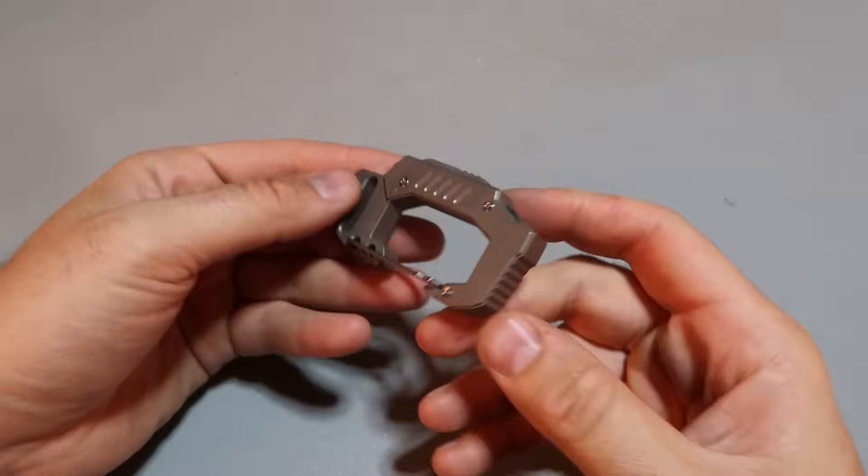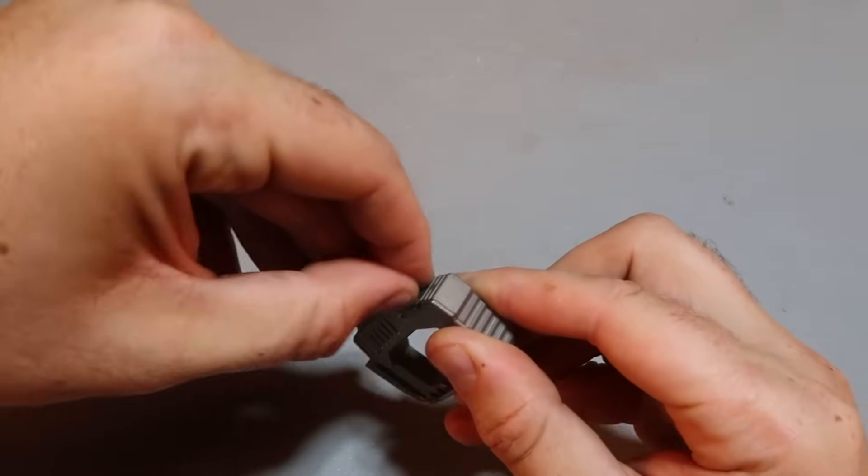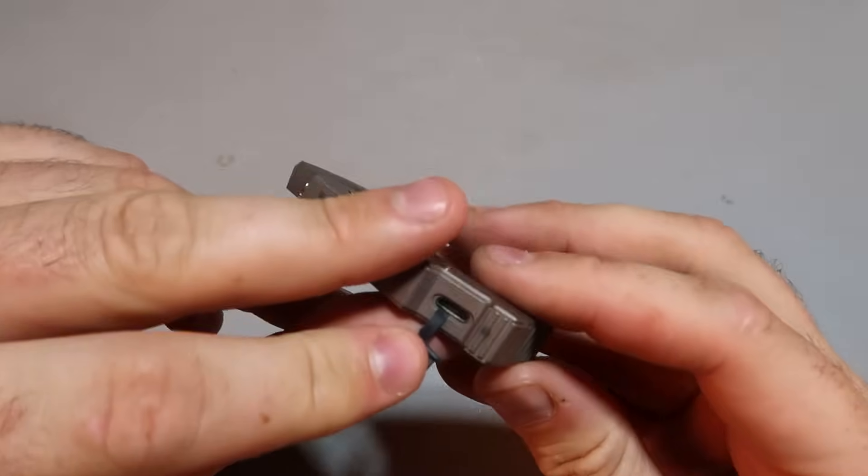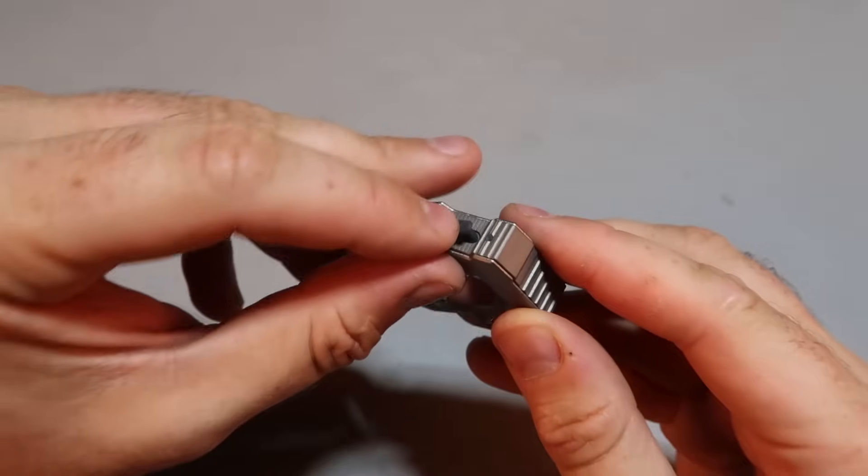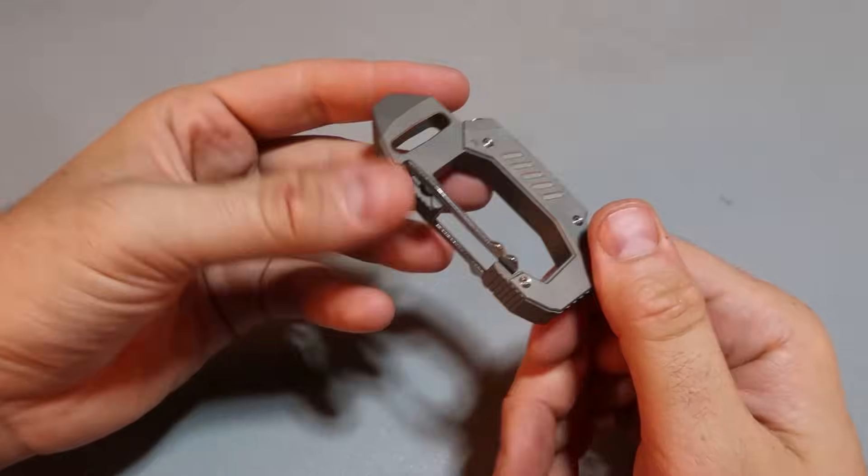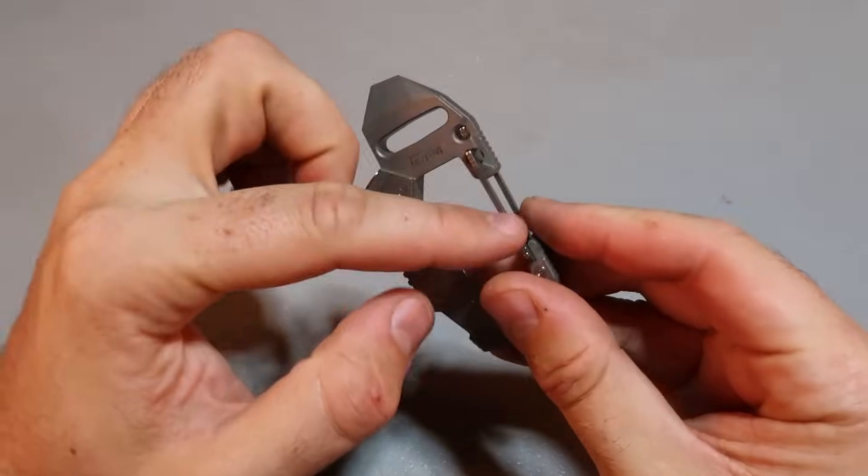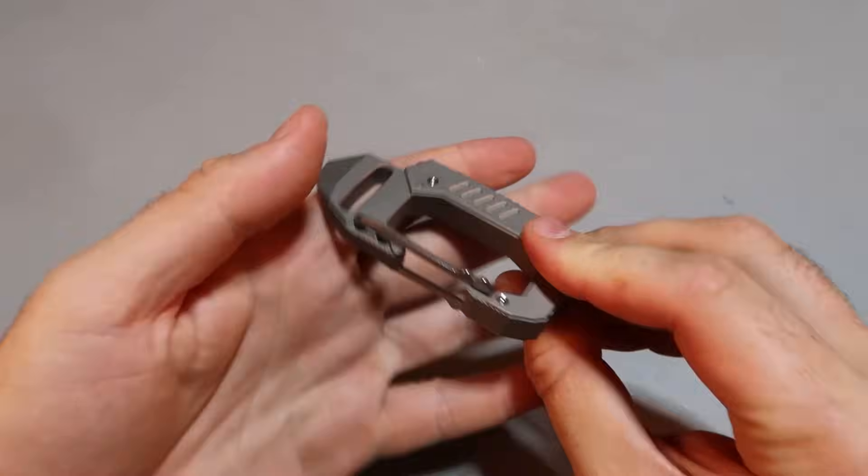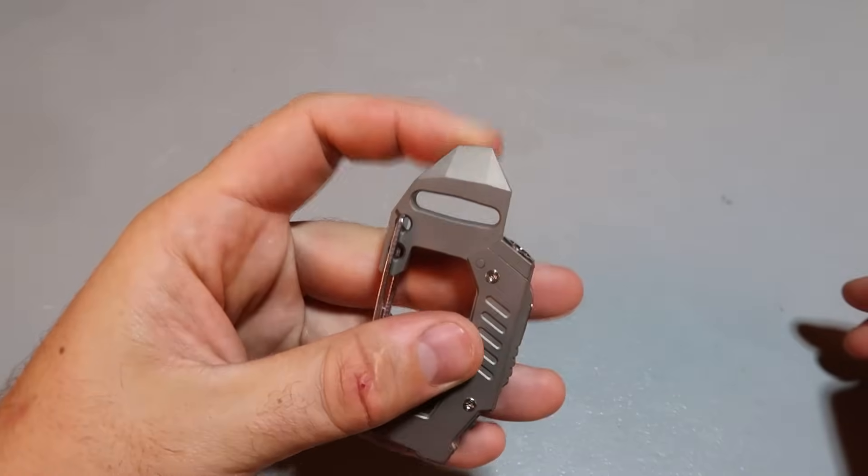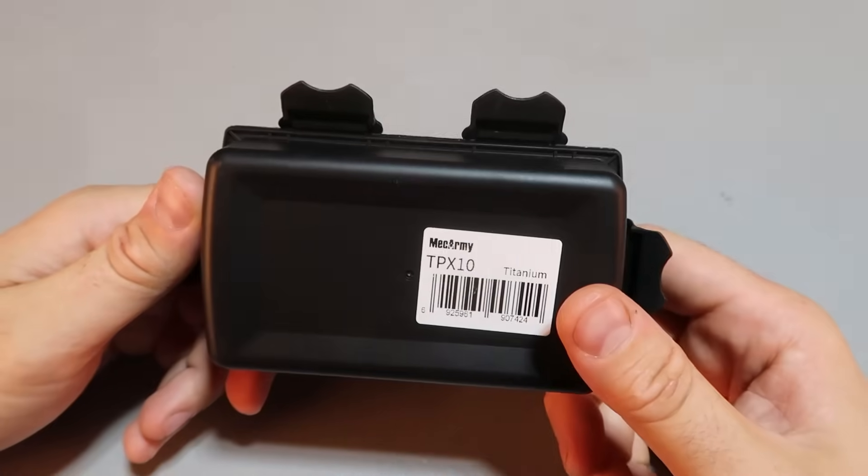I cannot believe how light that is. To recharge it looks like it's USB-C maybe. No, one of those Underwood chargers. Very nice clip, so it goes in here, tension tight, and again very lightweight, beautiful flashlight pry bar carabiner, one of a kind for sure, Mac army.